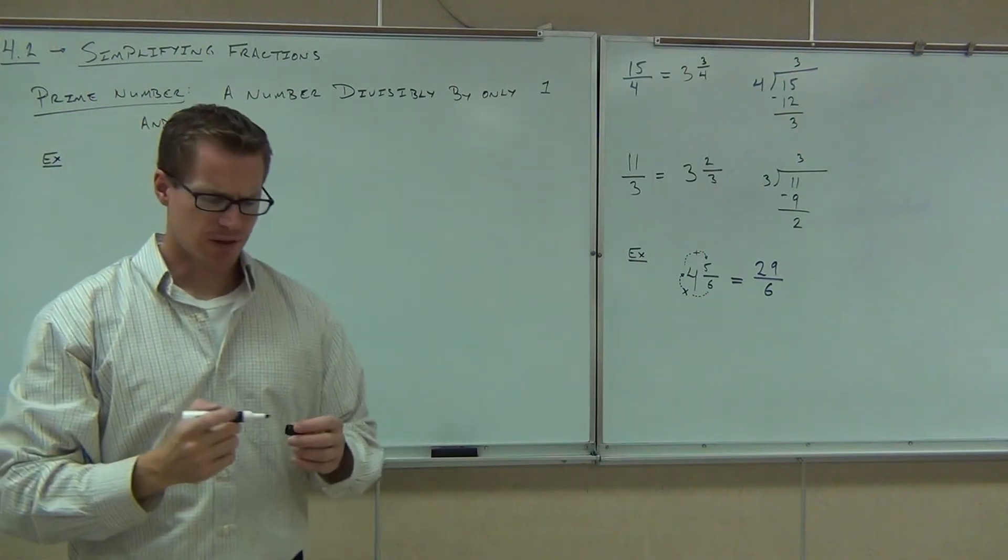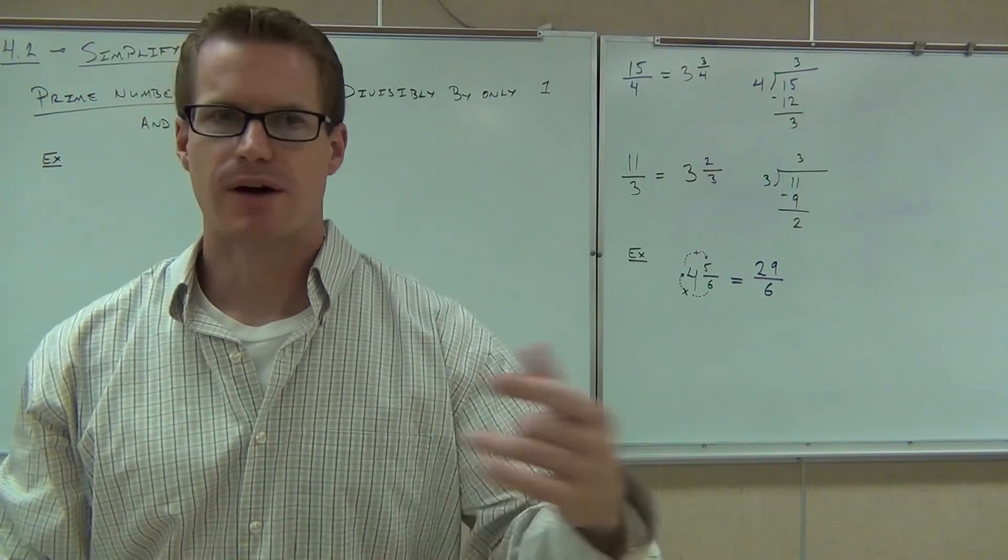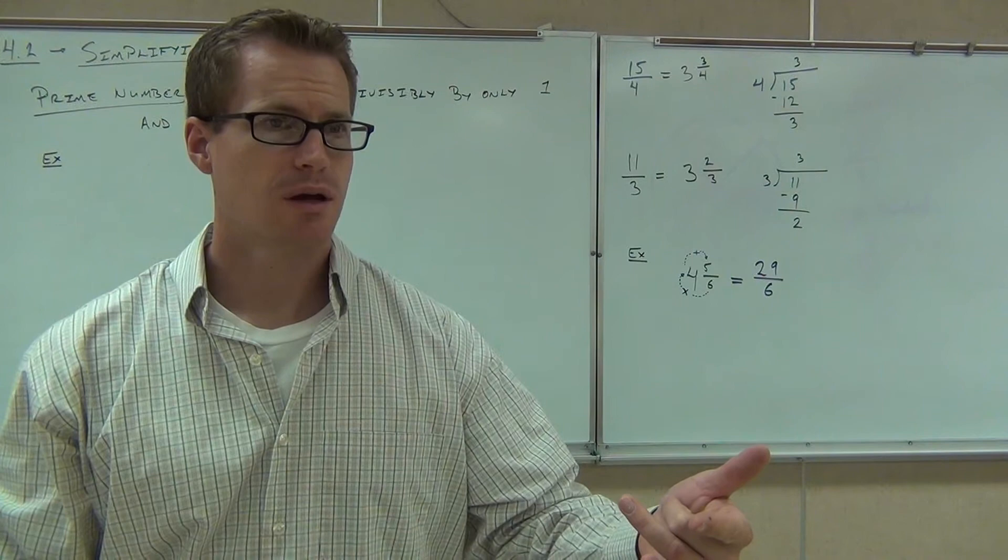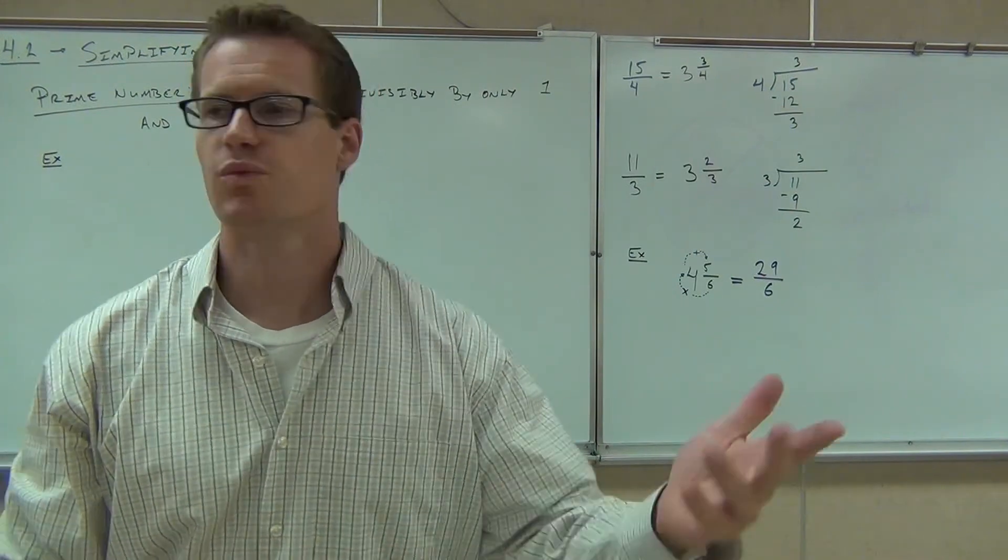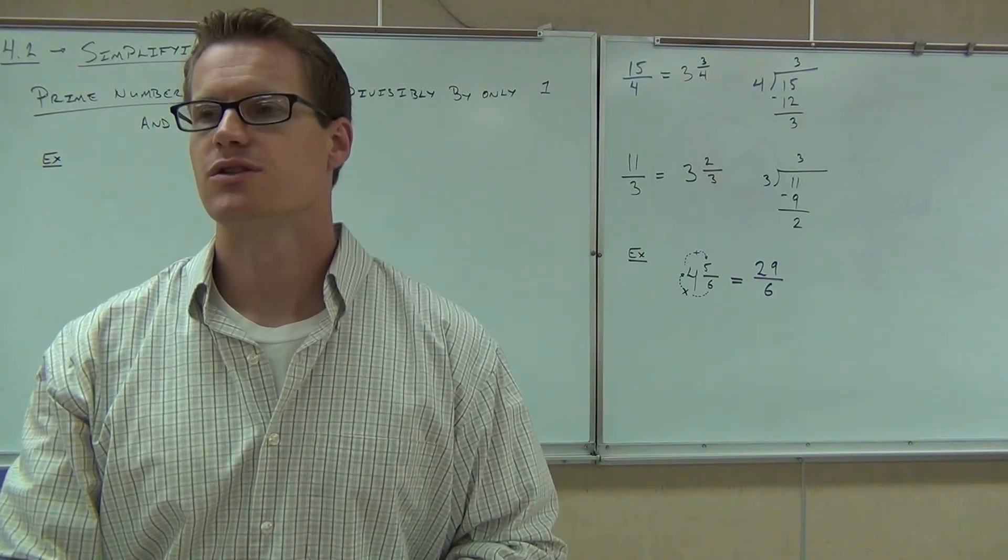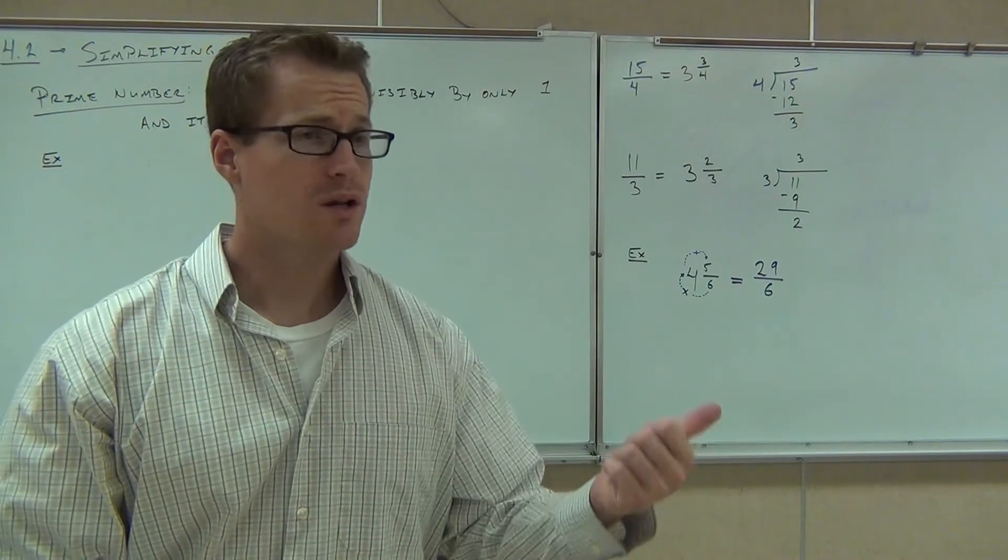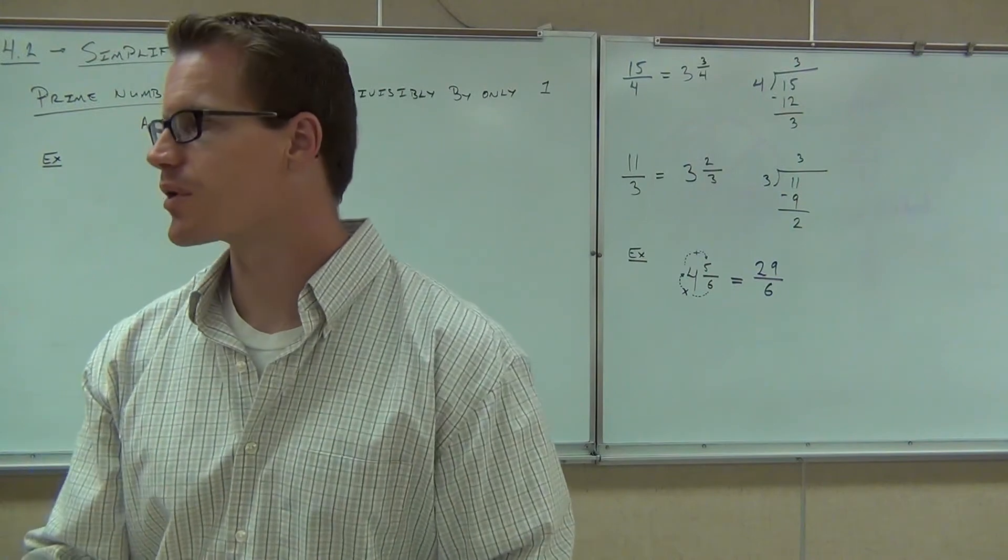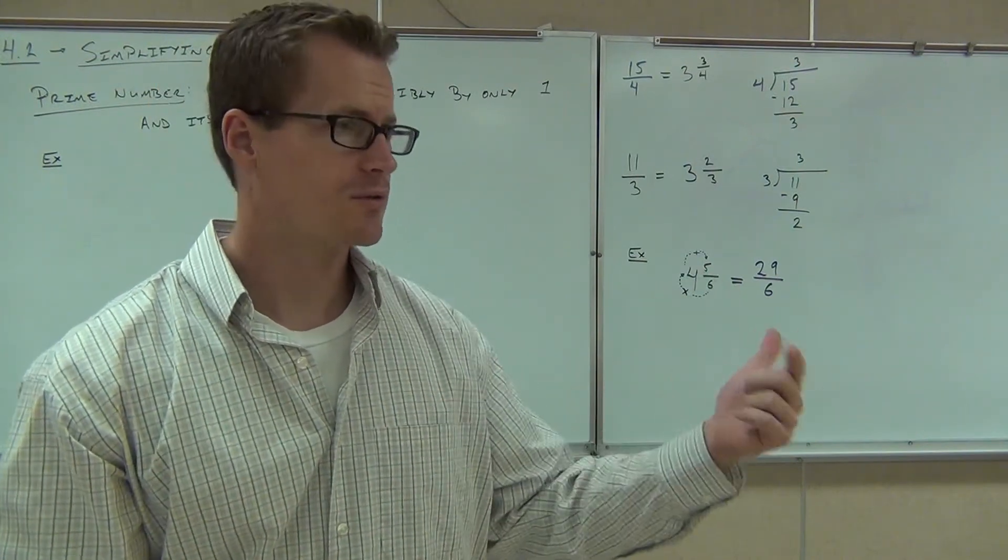Number divisible by only one and itself. Let me give you an example here. How about the number six? One divides six, doesn't it? And six divides six, doesn't it? One goes into six six times. Six goes into six one time. Does anything else go into six? Two and three. Okay, so that can't work for a prime number. A prime number, you have to go one goes into six, six goes into six, but then nothing else goes into six. That would be a prime number. In our case, for six, it doesn't work because two and three both divide six.